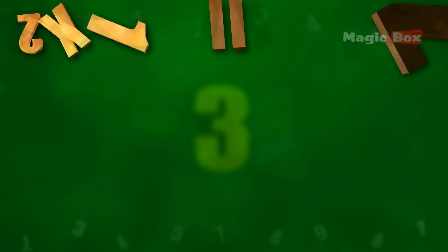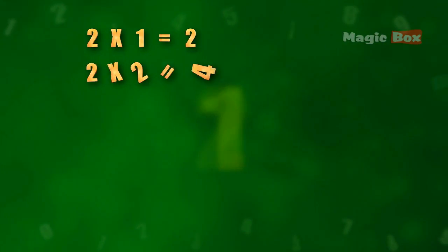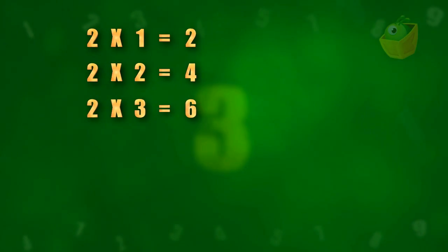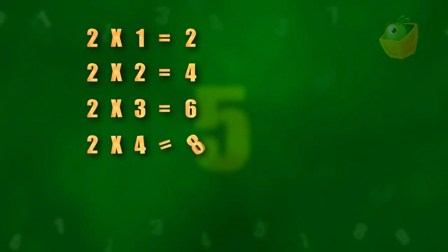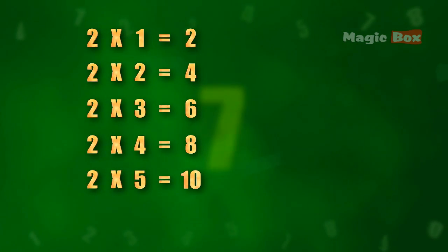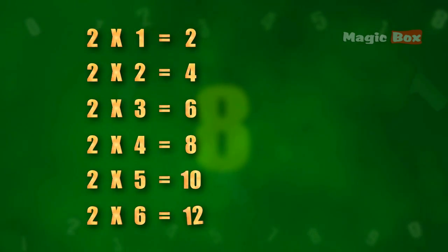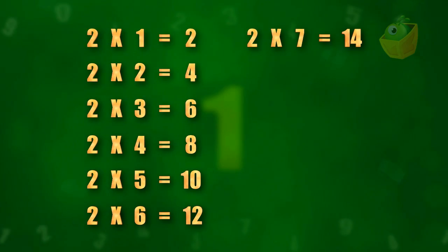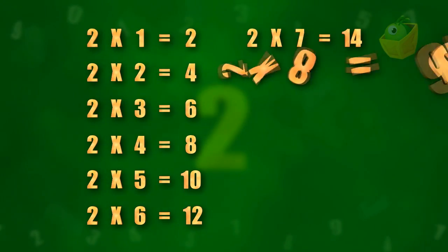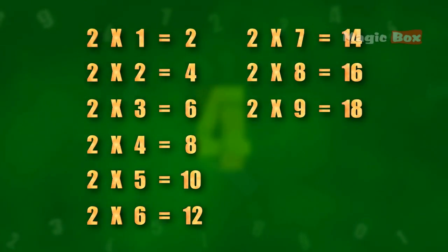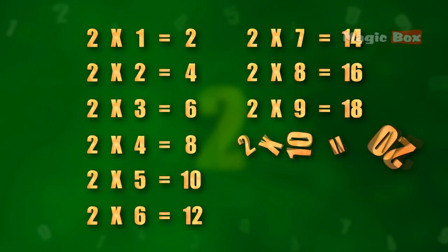2 times 1 is 2, 2 times 2 is 4, 2 times 3 is 6, 2 times 4 is 8, 2 times 5 is 10, 2 times 6 is 12, 2 times 7 is 14, 2 times 8 is 16, 2 times 9 is 18, 2 times 10 is 20.